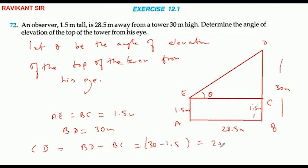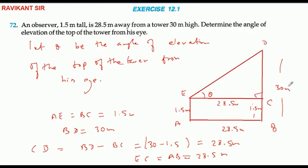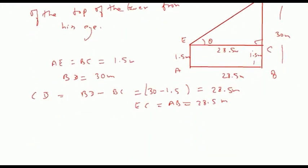30 minus 1.5 equals 28.5 meter. The horizontal distance is also 28.5 meter. Using tan theta equals perpendicular over base, tan theta equals 1.